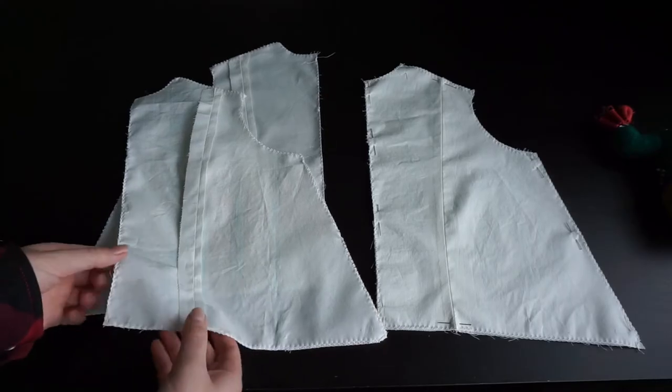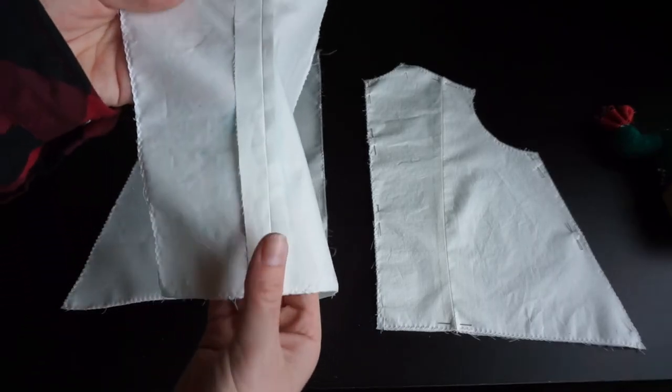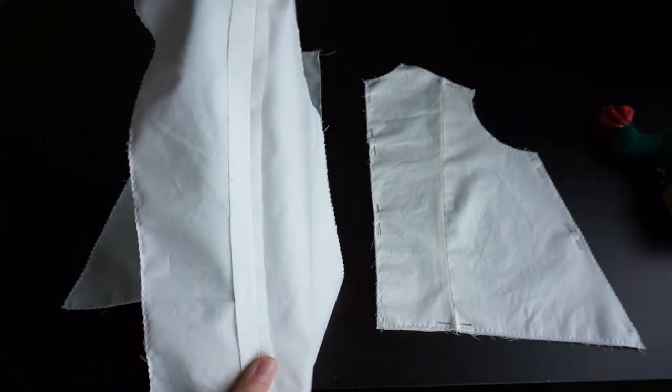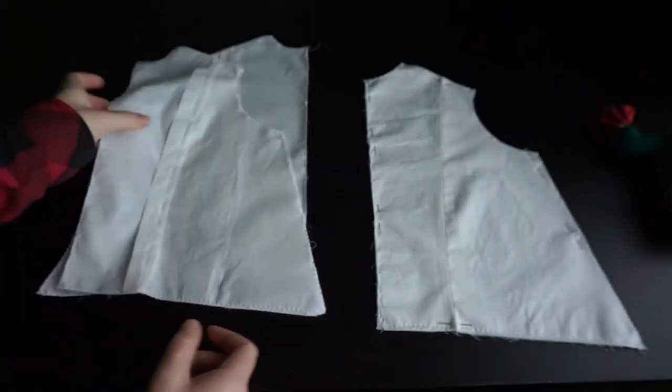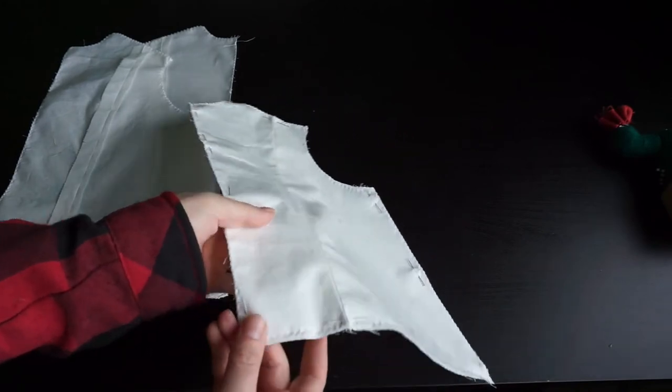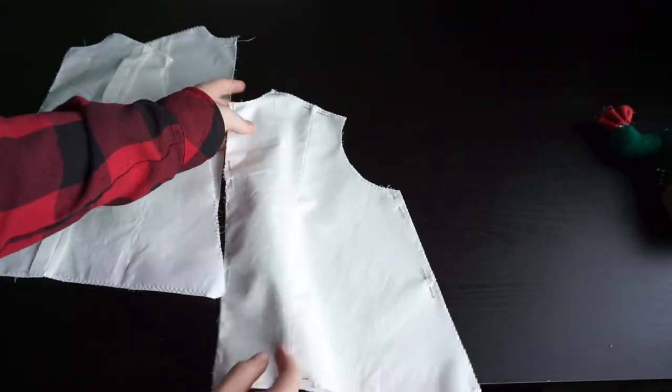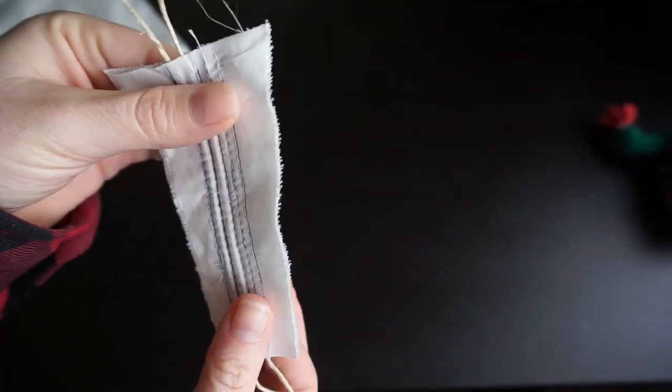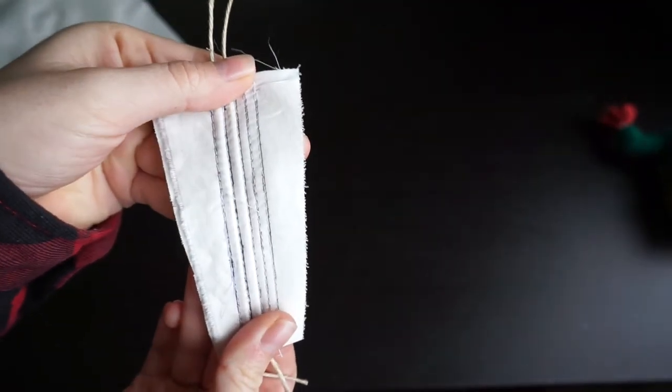Seams have been pressed open and the pieces have been stitched all around, and it's time for the first mammoth task of these stays. So now it is time to pin all the pieces together and actually stitch all those cording lines. I actually made a practice piece to see if the cording lines work as they are on the pattern.